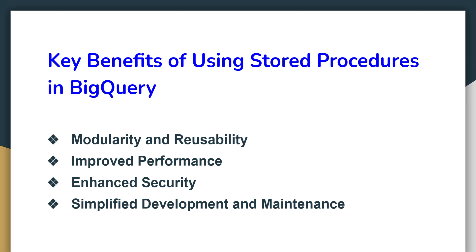Key benefits of using stored procedures in BigQuery: First is modularity and reusability — breaking down complex tasks into smaller manageable procedures and reusing them across multiple queries and jobs. Next is improved performance — precompile and optimize SQL statements for faster execution. Then enhanced security — controlling access to sensitive data by granting permissions to specific procedures. Finally, simplified development and maintenance — centralize complex logic in one place, making it easier to understand, test, and modify. It also reduces the risk of errors by avoiding repetitive code.